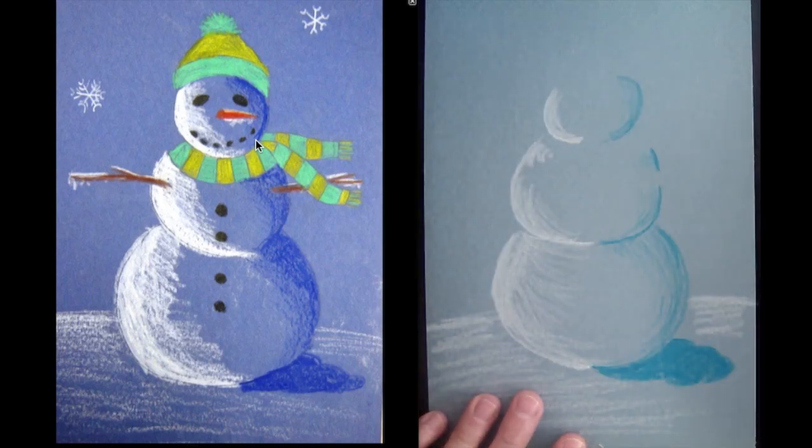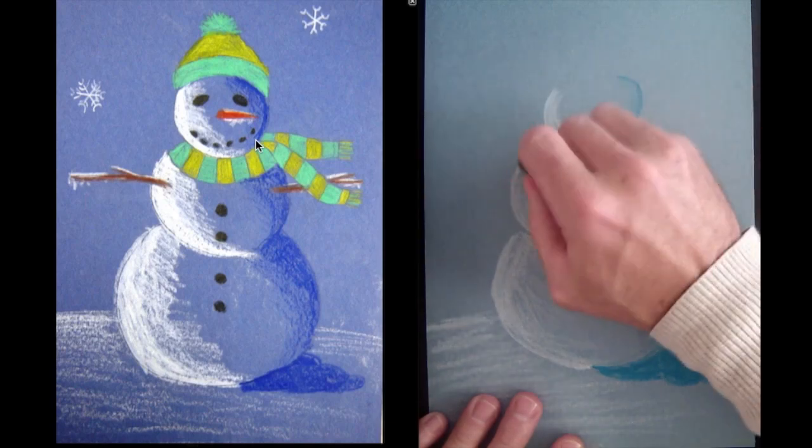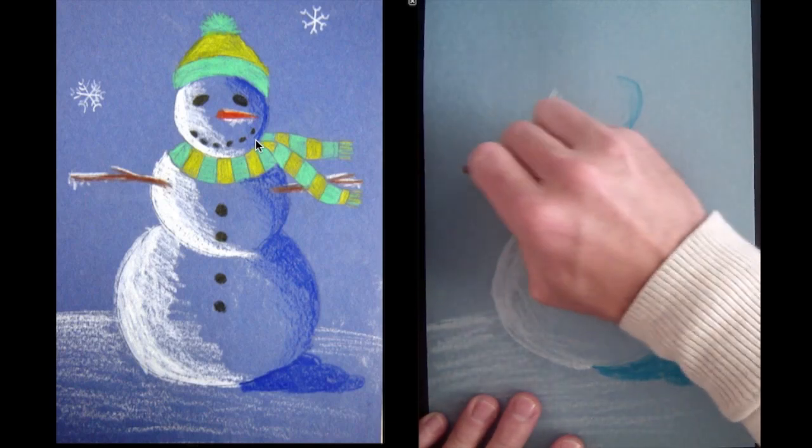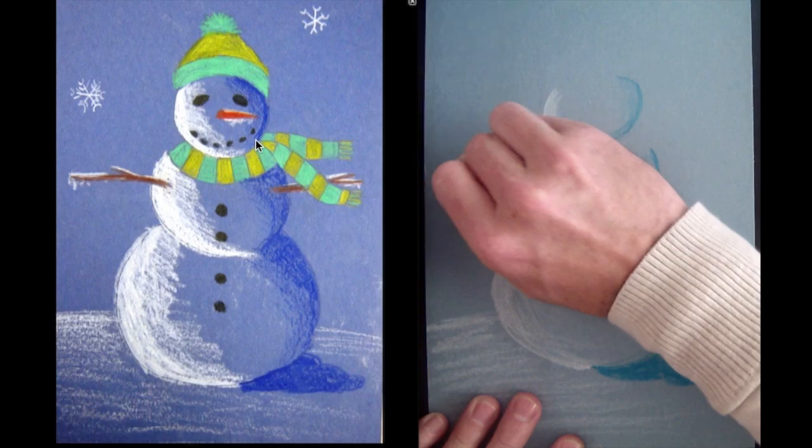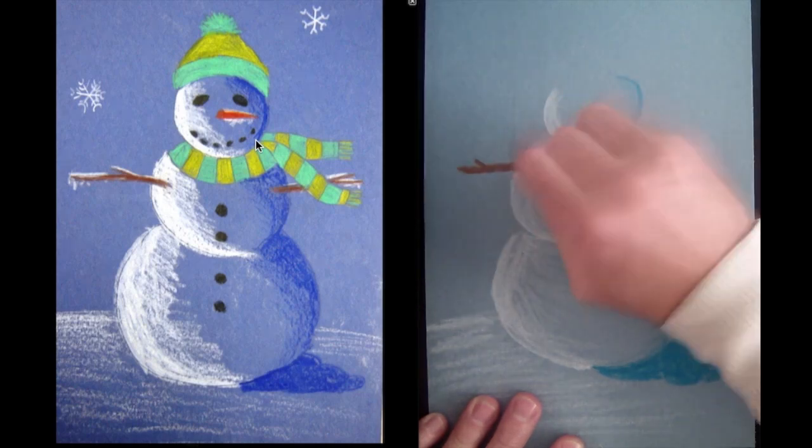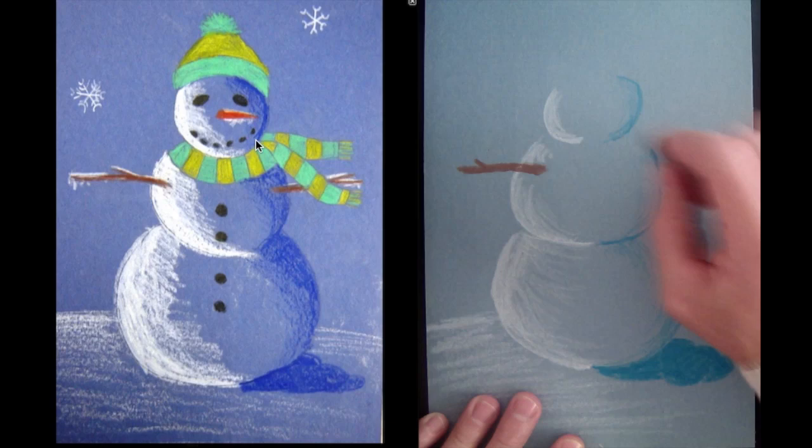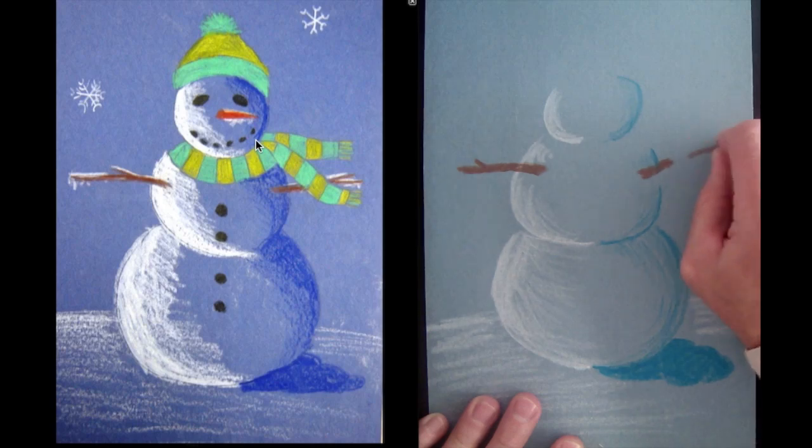Let's come back and add our arms because we left some space. Let's do some little sticks for arms. Look at the ones on the paper, there's not a lot of points to those sticks. In fact, we're going to come back and add some snow to them. And over here, we're going to skip a space for our scarf because that's a really cool scarf the snowman has around his neck.